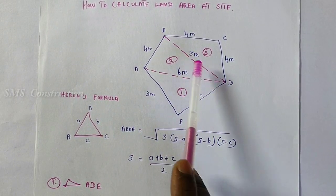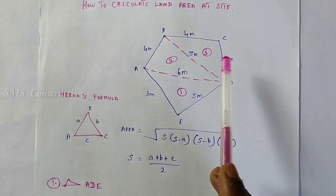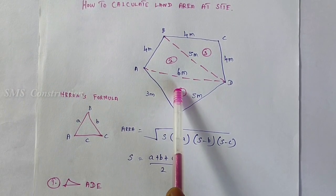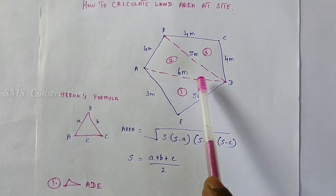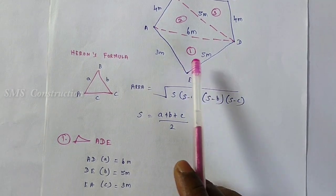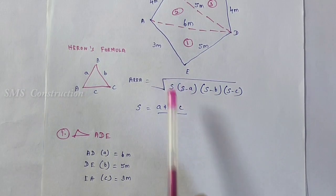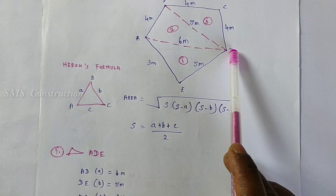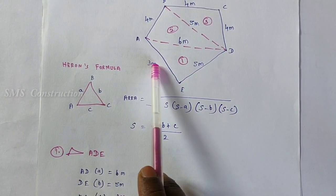It is a triangle, and this triangle value is 0. This triangle has an area of P. Now we are going to calculate the land area using the first triangle A-D-E. A-D is small a, D-E is small b, and A-E is small c.